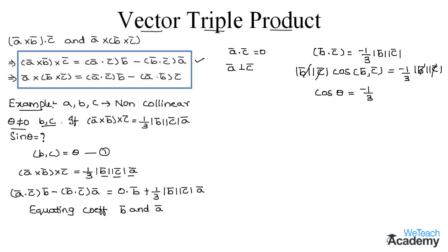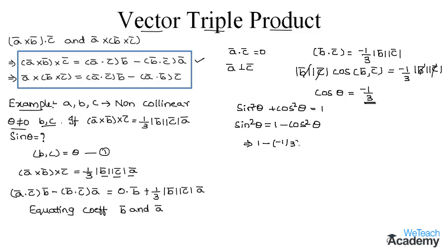From trigonometric identities, sin²θ + cos²θ = 1, so sin²θ = 1 − cos²θ. Substituting cos θ = −1/3: sin²θ = 1 − (−1/3)² = 1 − 1/9. Taking the LCM, sin²θ = (9 − 1)/9 = 8/9. Therefore sin θ = √(8/9) = √8 / √9.